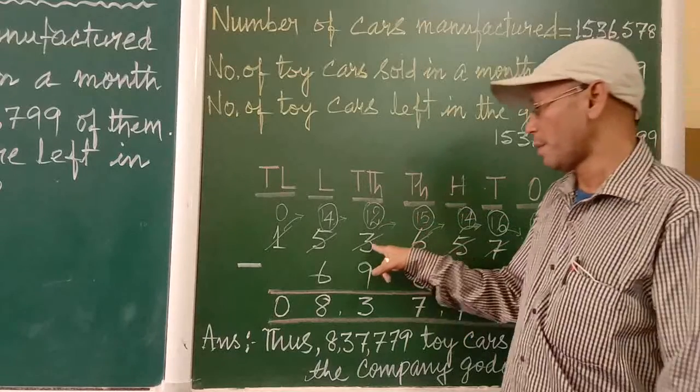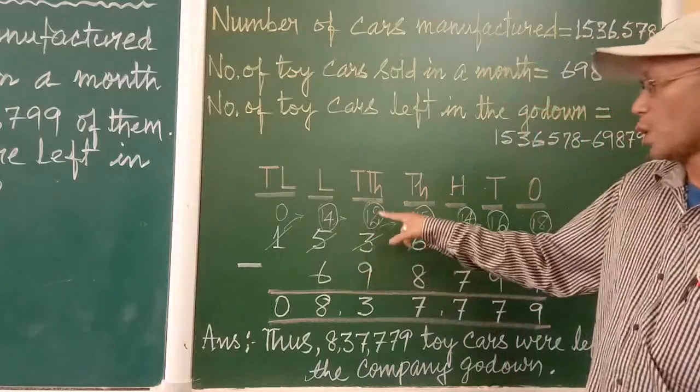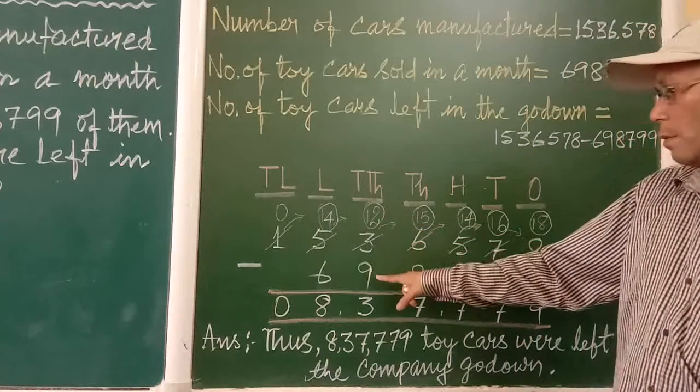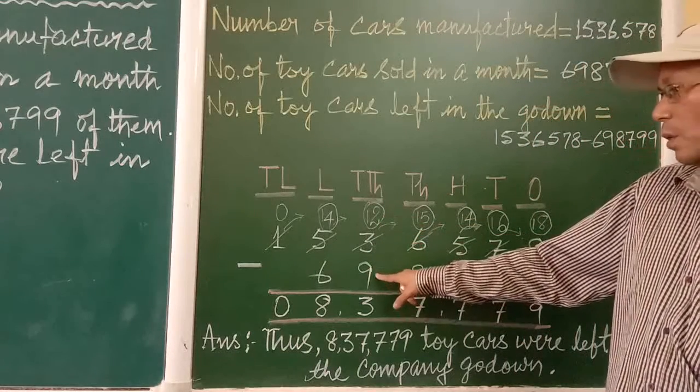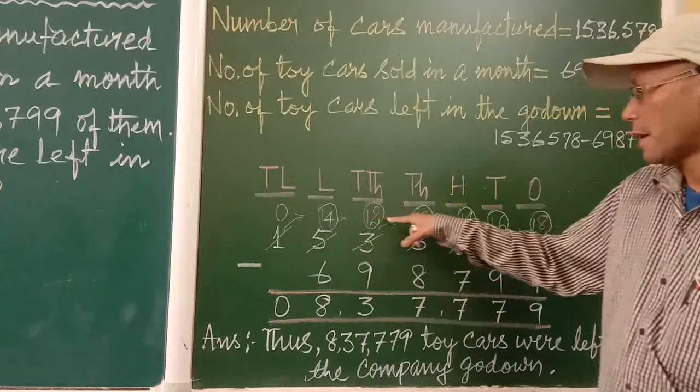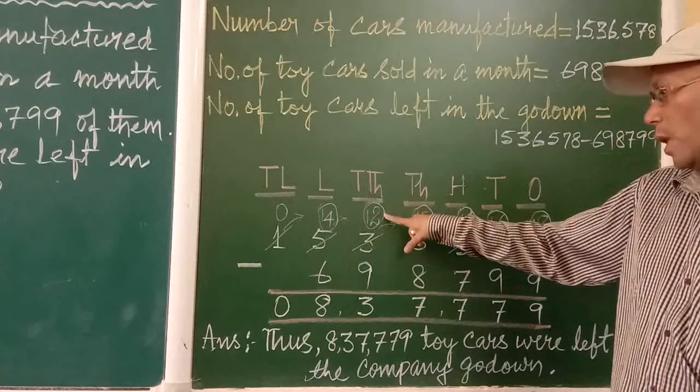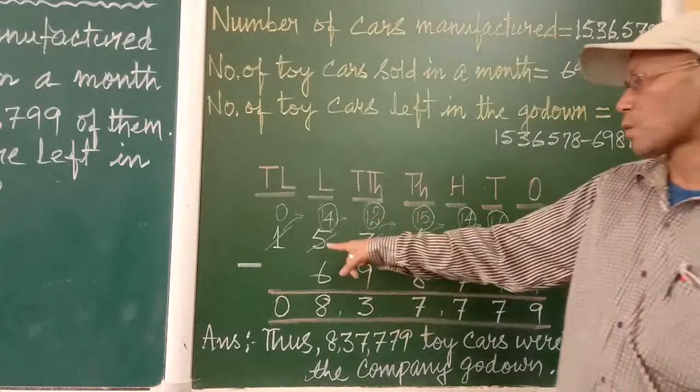Here, previously it was 3, now it is 2. From 2 we have to subtract 9. So again we have to carry from here. Then it will become 12. 12 minus 9 is 3.